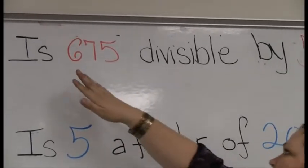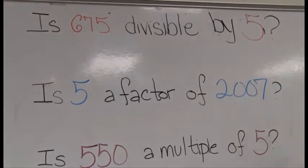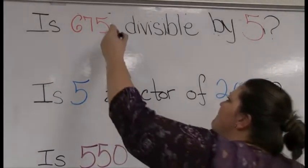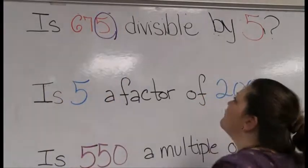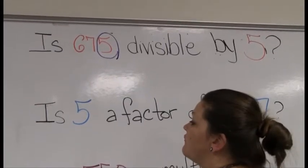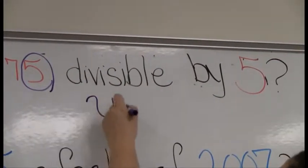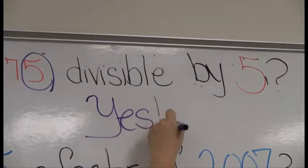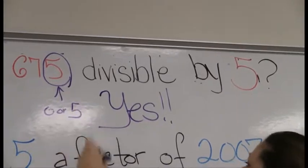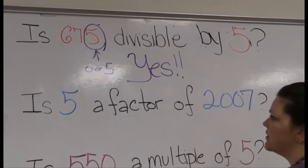Let's apply it. Here's one you might see: is 675 divisible by 5? I go straight to the final digit — there's a 5. I said if a number ends in zero or five it's divisible by 5, and there's a 5 right there, so my answer is yes.